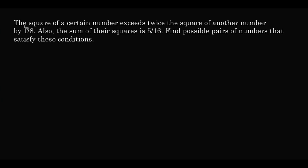The problem is: the square of a certain number exceeds twice the square of another number by 1 over 8. Also, the sum of their squares is 5 over 16. Find the possible pairs of numbers that satisfy these conditions.